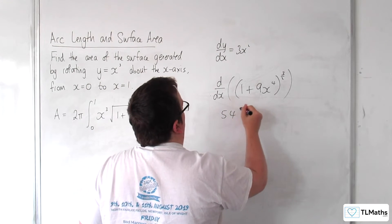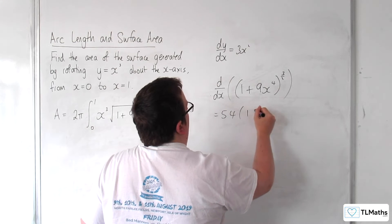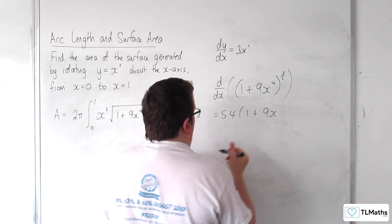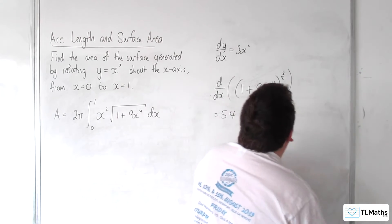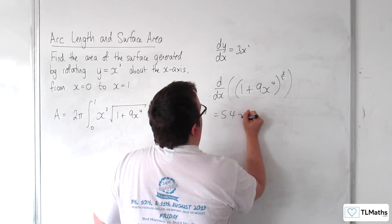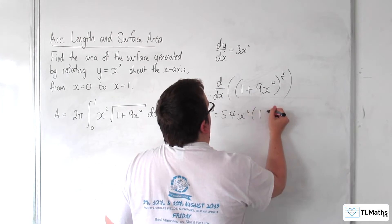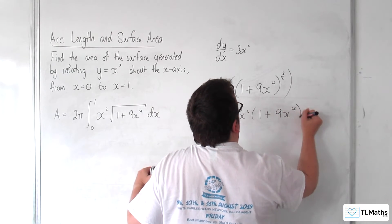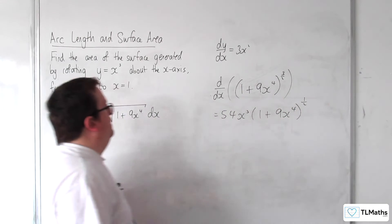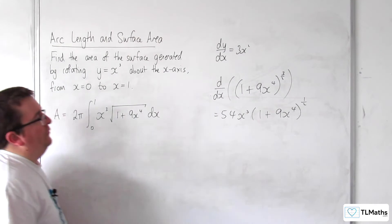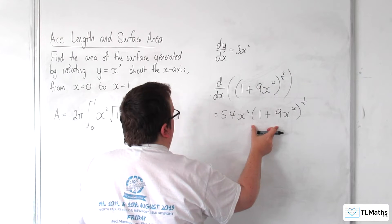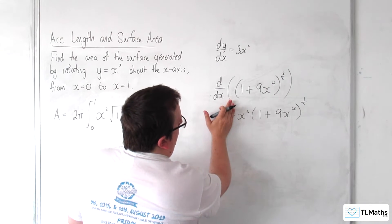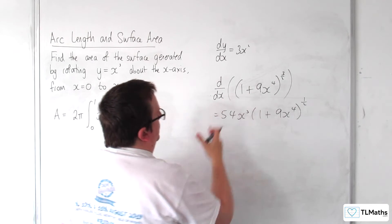So I'd have 54 times 1 plus 9x to the 4, to the power of a half. So if that differentiates to that, then this will integrate to 1 over 54 times that.